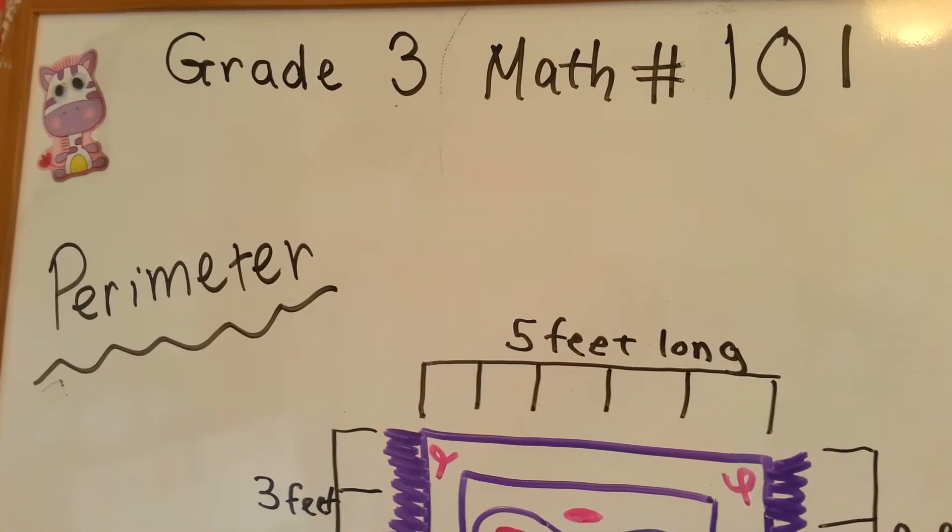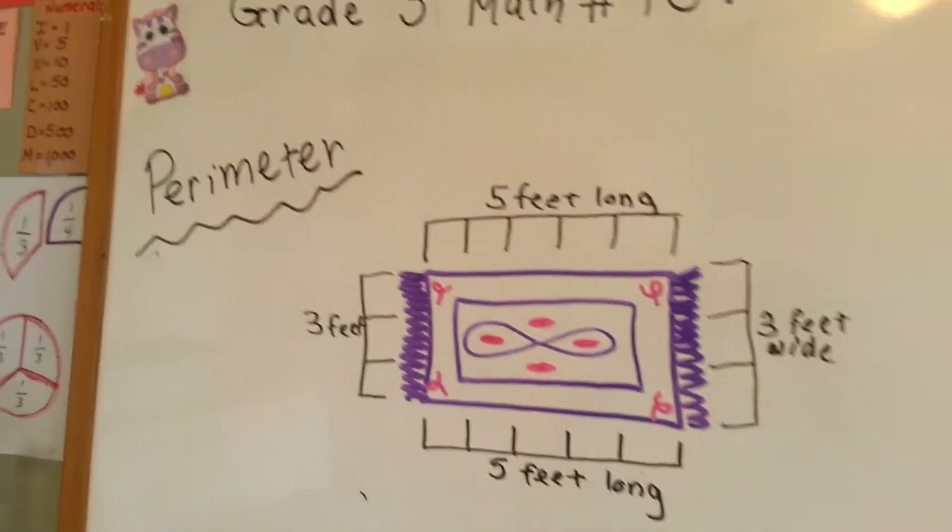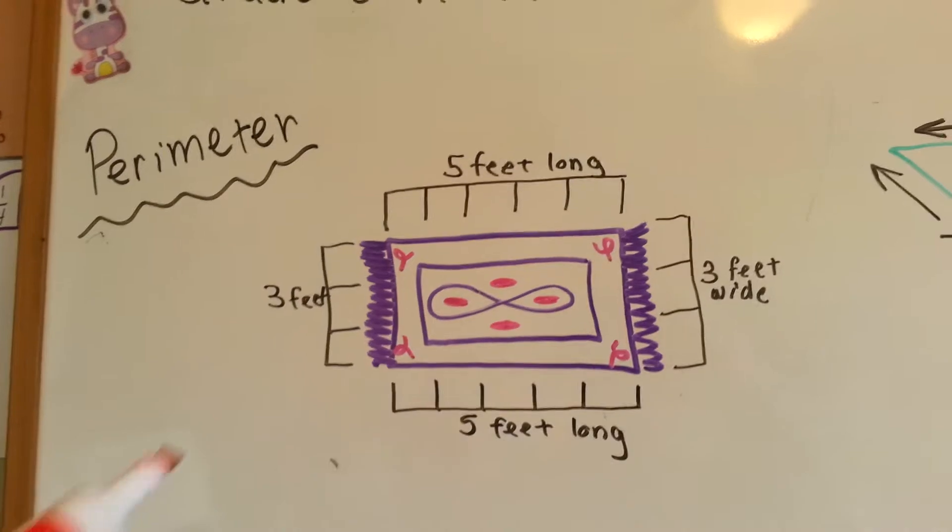Grade 3 Math 101: Perimeter. We just talked about square units in our last video, so now we're going to talk about perimeter.